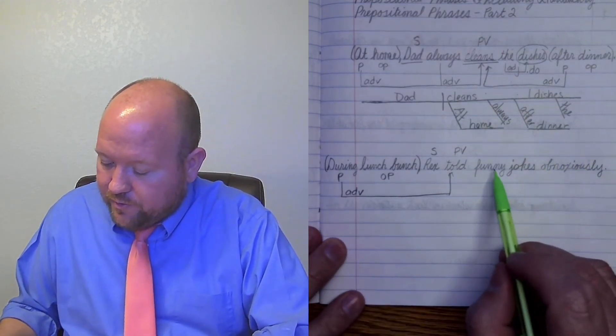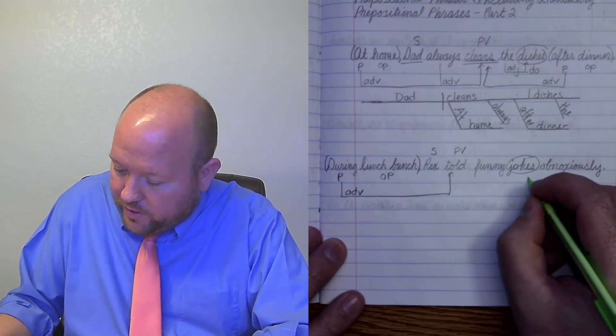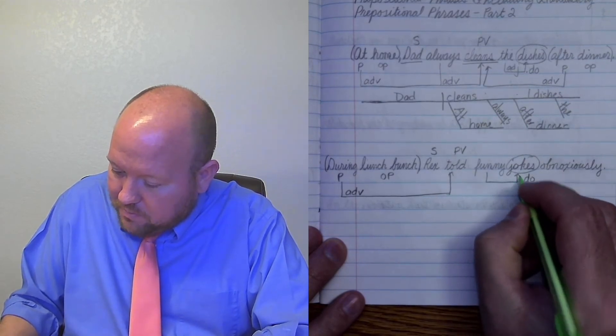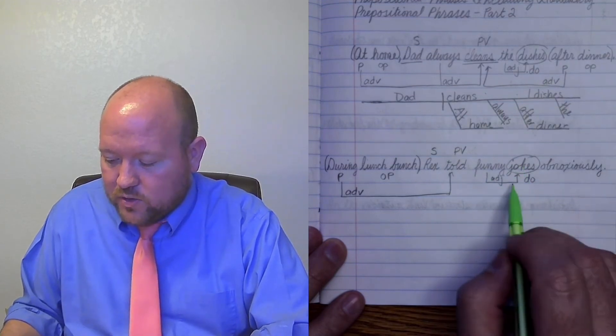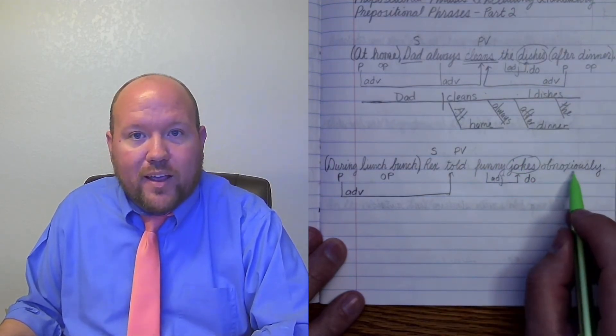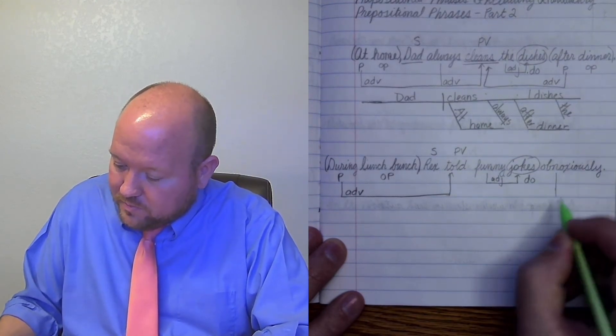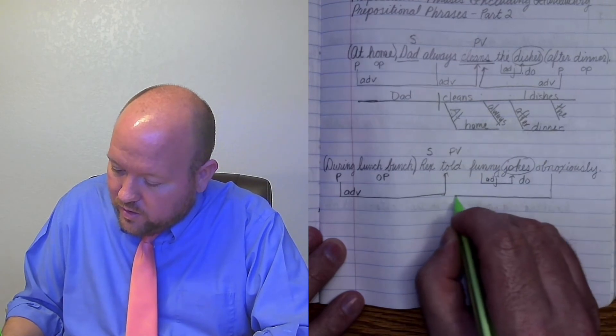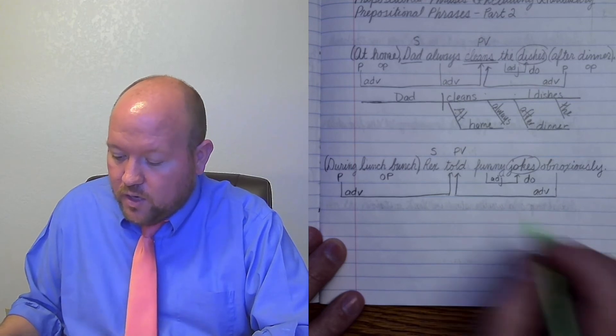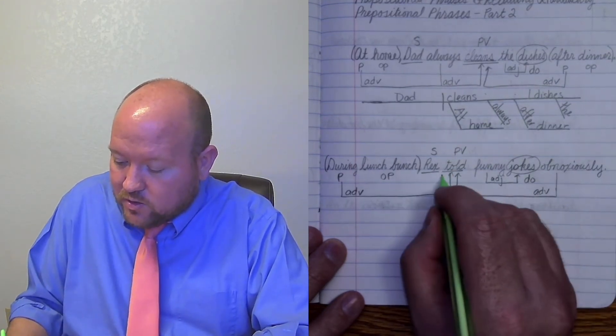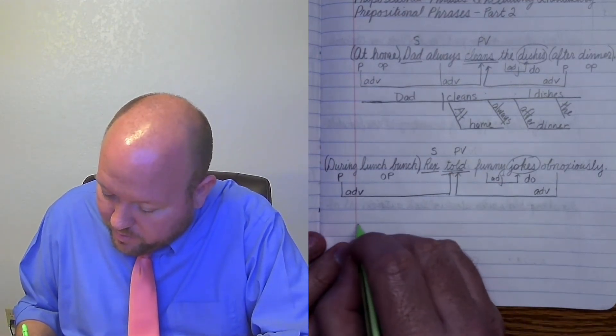Next we have funny is modifying the jokes and the jokes are what is being told. So this is my direct object and funny is modifying that. So it's an adjective because adjectives tell us what kind of jokes and that's an adjective question. And then obnoxiously, obnoxiously tells us how they were being told. So this is an adverb. Come down over and up. And this is an adverb. Underline my subject once. Underline my predicate twice. All right. My verb phrase twice. Oh, no helping verbs with this. All right. So let's go ahead and diagram this now.